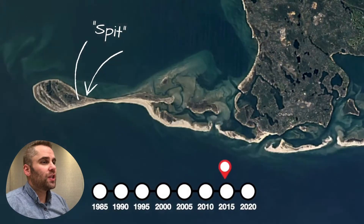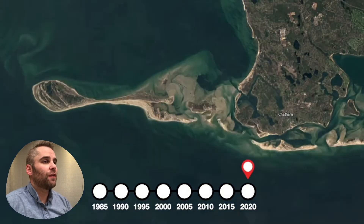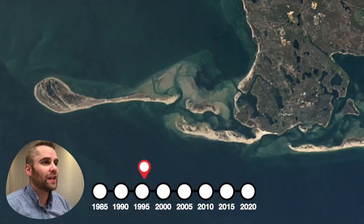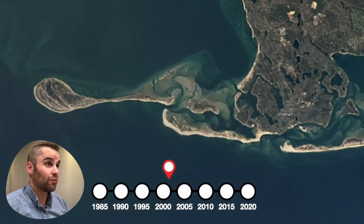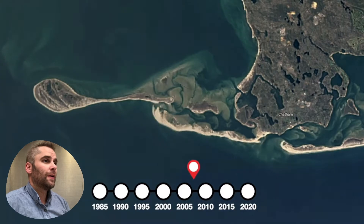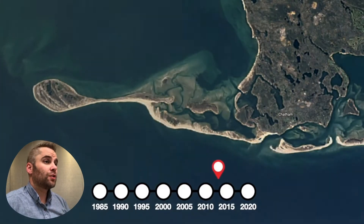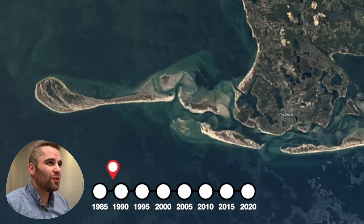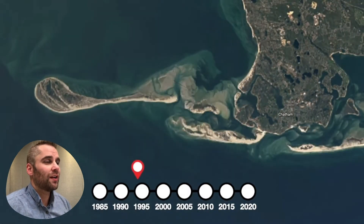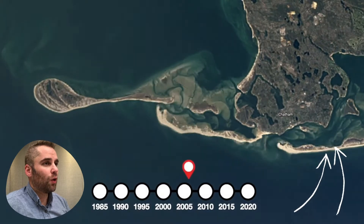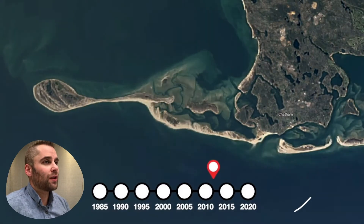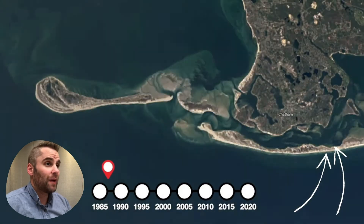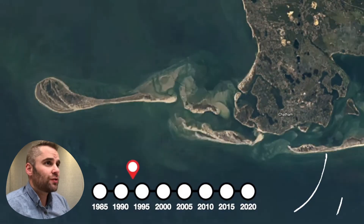Both of these processes involve a constant balance of deposition and erosion. On the right side of the image, we see that erosion is kind of winning here — we can see this barrier island get a hole punched through it by a storm that moves through. That'd be a very bad place to build a house.